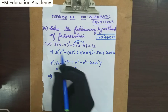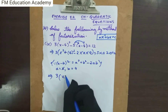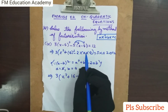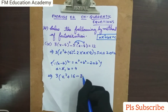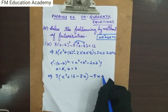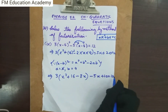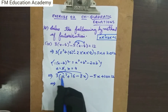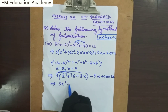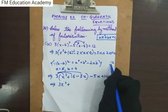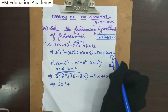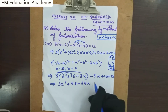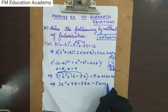Now I will simplify. Distributing the 3 across all three terms: 3·x² = 3x², 3·16 = 48, and 3·8x = 24x. So we have 3x² + 48 − 24x − 5x + 20 = 12.